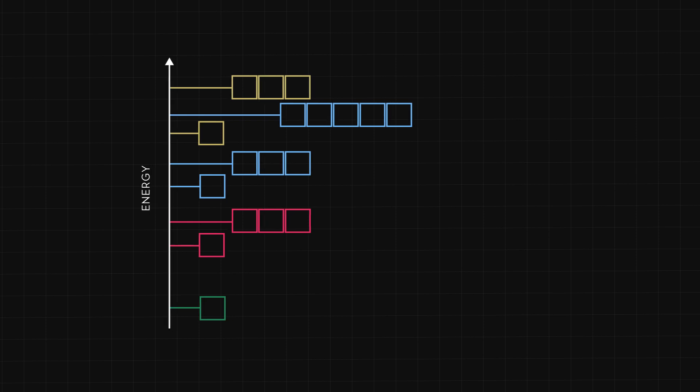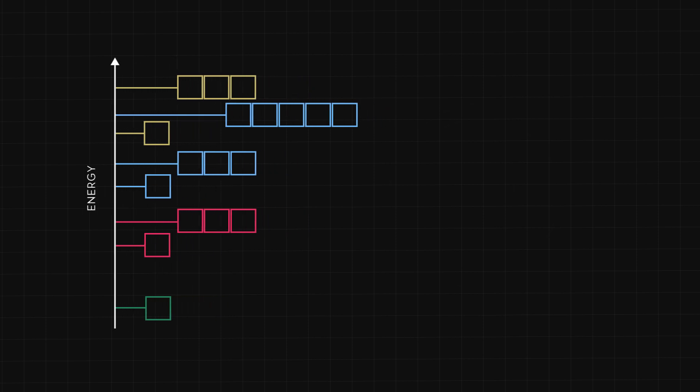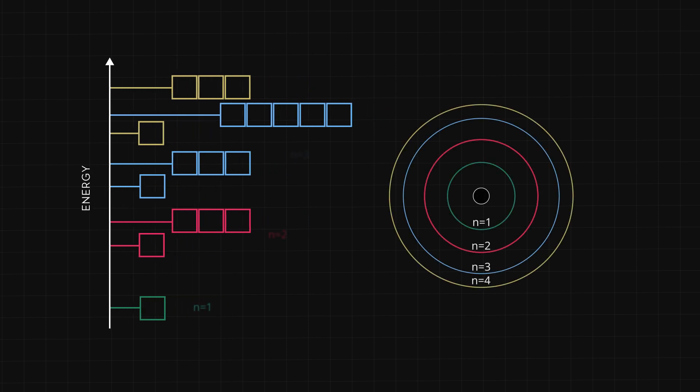Unfortunately, we don't have a simple formula for the energy levels of a multi-electron atom. However, the Shell model does tell us the pattern we should expect for these energy levels, and this pattern tells us a lot.